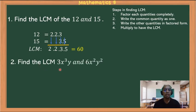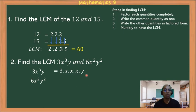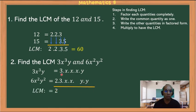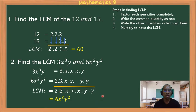Example 2: find the LCM of 3x³y and 6x²y². Factor 3x³y as 3 · x · x · x · y, and 6x²y² as 2 · 3 · x · x · y · y. Align common factors: 3 and 3 are common — write as 1; x and x are common — write as 1 twice; y and y are common — write as 1. Bring down remaining: 2, the extra x, and the extra y. So the LCM is 6x³y².